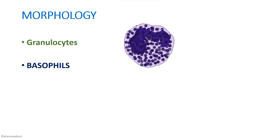Basophils also have a multilobulated nucleus that is purplish blue in color. The cytoplasm is plentiful, but the differentiating feature is coarse bluish-black granules — so many granules that they overlie the nucleus, making the nucleus not clearly visible. This appearance is known as the smoked glass appearance of basophils.